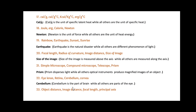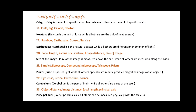Next: object distance, image distance, focal length and principal axis. Friends, here principal axis is the odd one out. Except for principal axis, all the others — object distance, image distance and focal length — can be measured physically with the help of a scale, thread and so on.